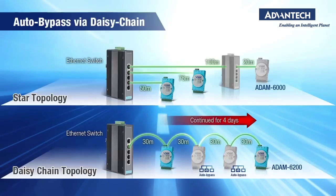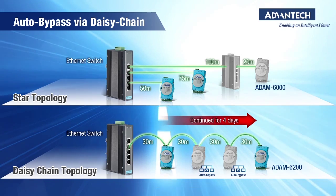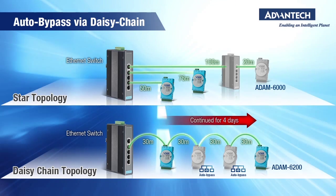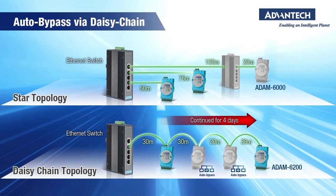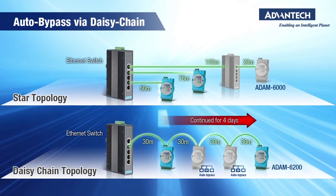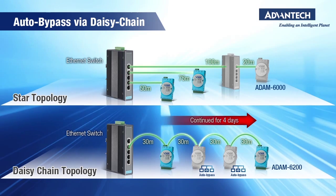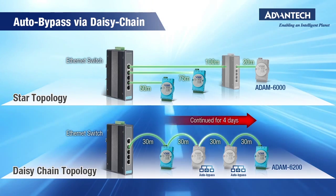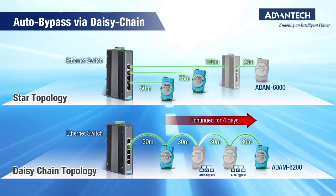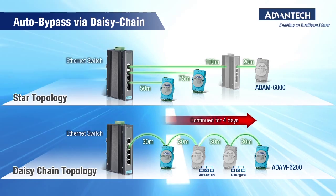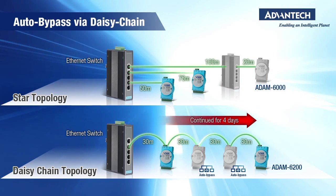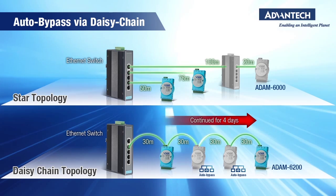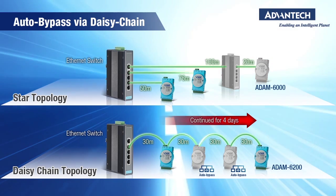Let's not forget the new Ethernet daisy chain capability of the Atom6200 family. Each module has two RJ45 ports supported by an internal Ethernet switch. It's more reliable than a typical switch because of the auto-bypass feature — if the module loses power, the two RJ45 ports on the module automatically go into bypass, maintaining the Ethernet connection to downstream modules.